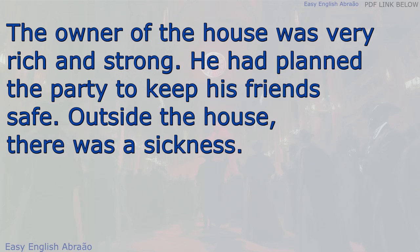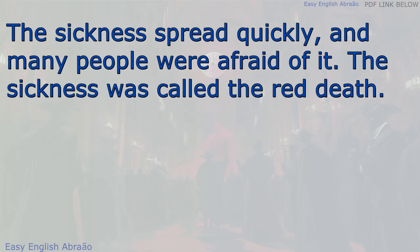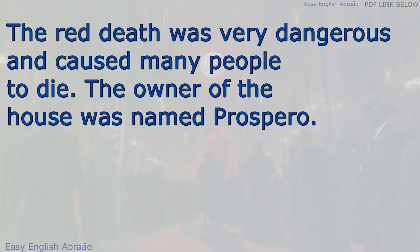The owner of the house was very rich and strong. He had planned the party to keep his friends safe. Outside the house, there was a sickness. The sickness spread quickly, and many people were afraid of it. The sickness was called the Red Death.